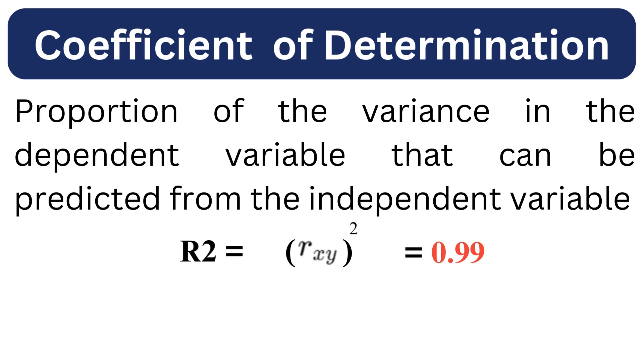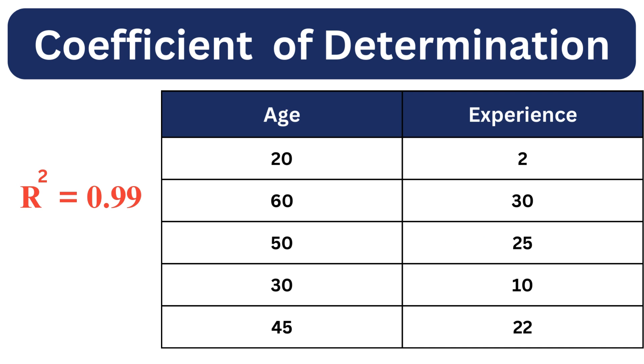For example, we can conclude that 99% of the variance in experience, that is our dependent variable, is predicted by the age, that is our independent variable.